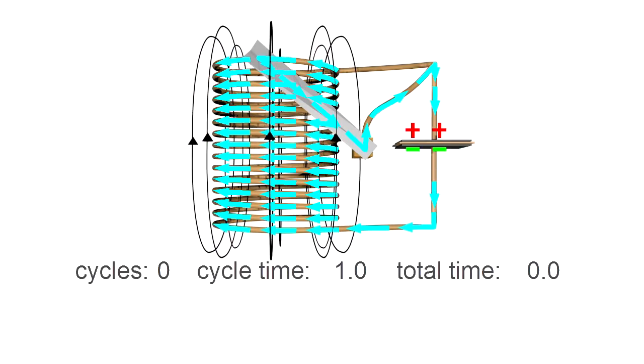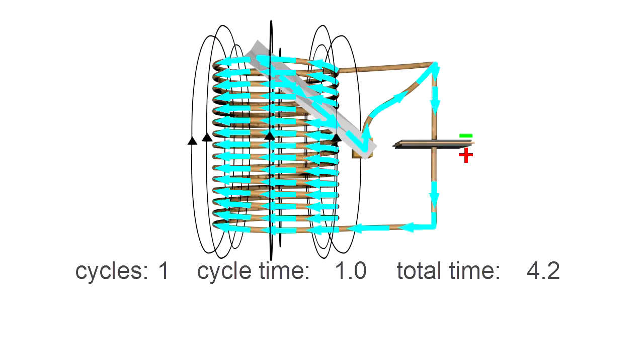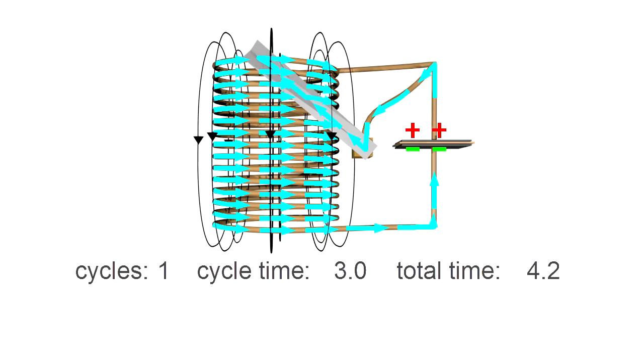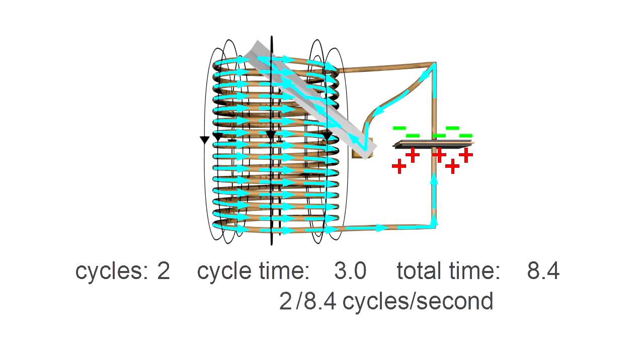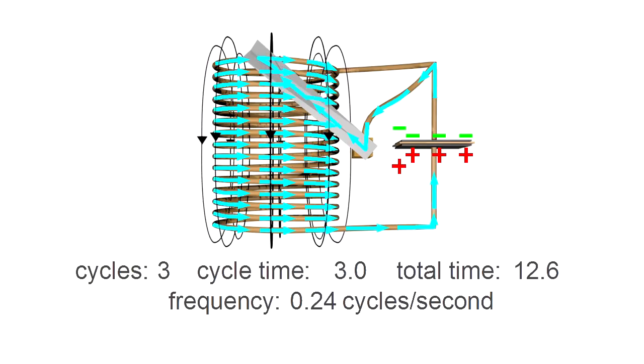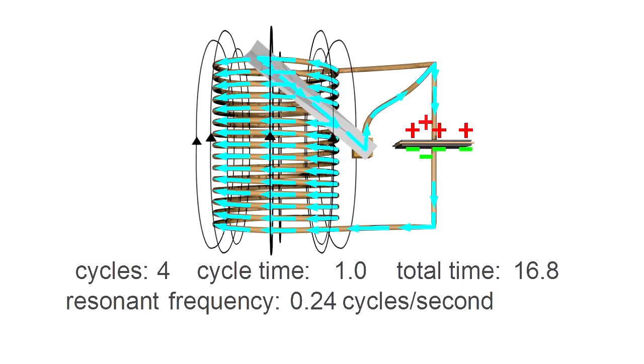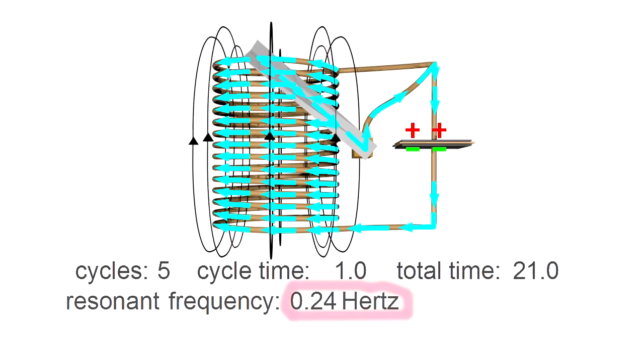Each time the current flows in one direction and then reverses and flows in the other direction is considered one complete cycle. That complete cycle always takes the same amount of time, and so there are a specific number of cycles happening per second. That cycles per second is the frequency. We further call it the resonant frequency. And instead of saying it's the cycles per second, we say it's some number of Hertz.